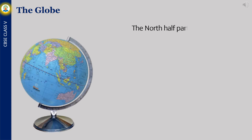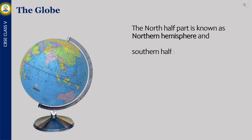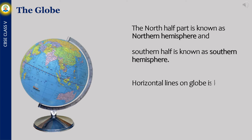The north half part is known as the northern hemisphere and the southern half is known as the southern hemisphere. Horizontal lines on the globe are known as latitudes. Vertical lines on the globe are known as longitudes.